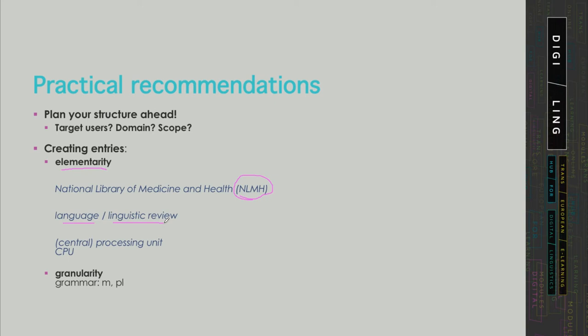They should be two separate data fields within the same entry, not two separate entries. Again, 'central processing unit' can be used as the canonical version, but you can also use the truncated version 'processing unit.' These are two term variants plus the abbreviation. So we would have three terms — 'central processing unit,' 'processing unit,' and 'CPU' — that should be entered into separate data fields within the same entry.